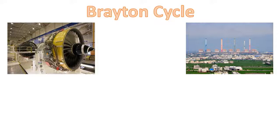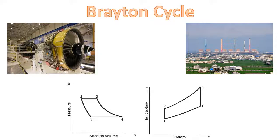The Brayton cycle is made up of internally reversible processes: isentropic compression, constant pressure heat addition, isentropic expansion, and constant pressure heat rejection.